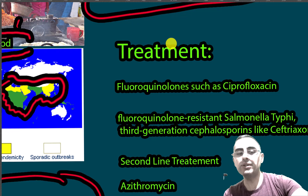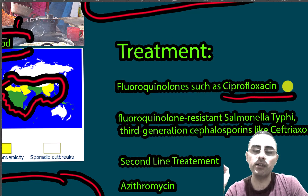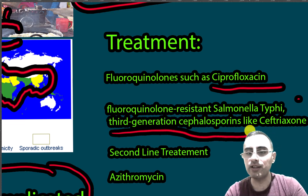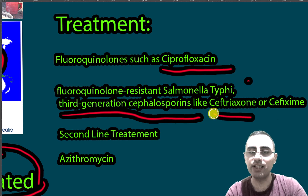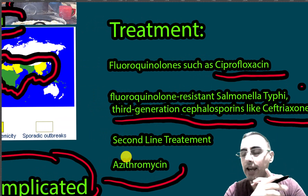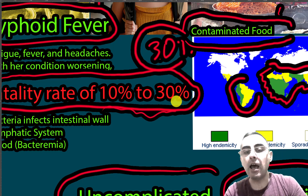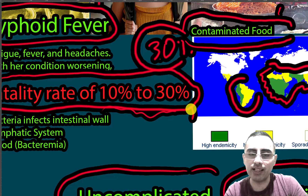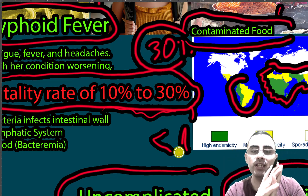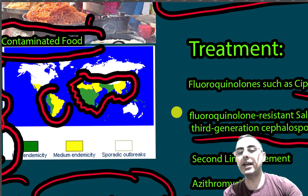For treatment, antibiotics are used. Fluoroquinolones such as ciprofloxacin are the first-line treatment. If the Salmonella typhi is fluoroquinolone-resistant, third-generation cephalosporins such as ceftriaxone and cefixime are used. Second-line treatment is azithromycin. Early treatment is critical because although the untreated death rate is 10–30%, after treatment the death rate decreases drastically to less than one percent.